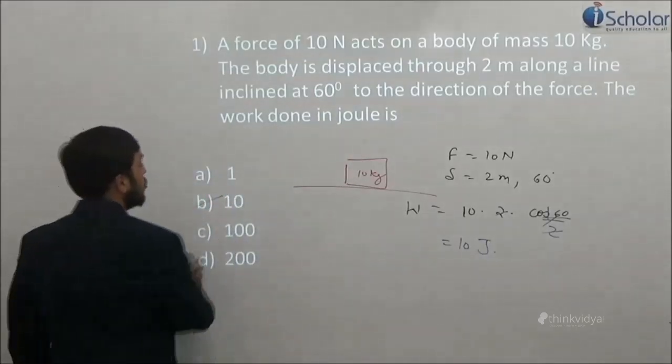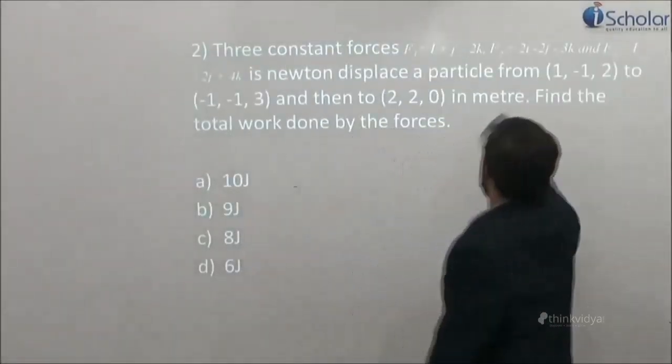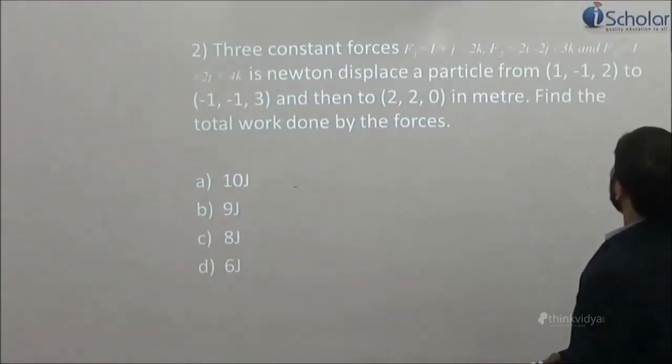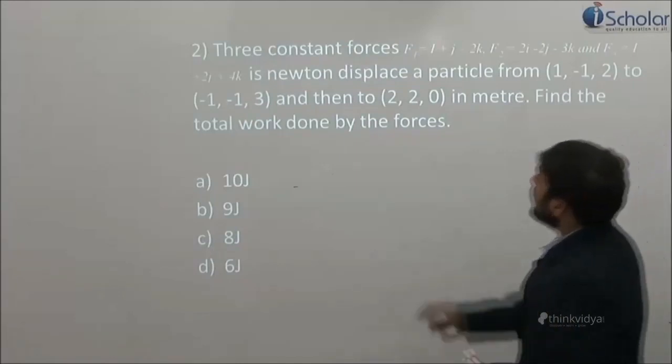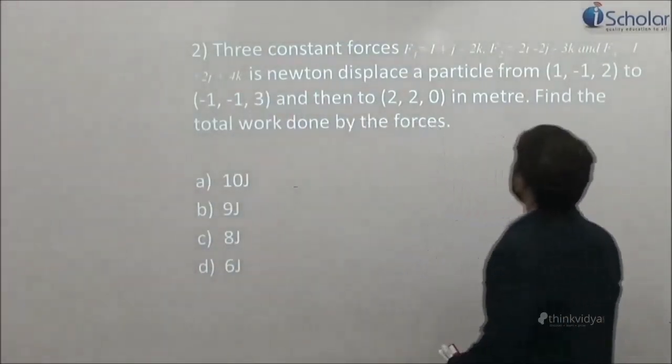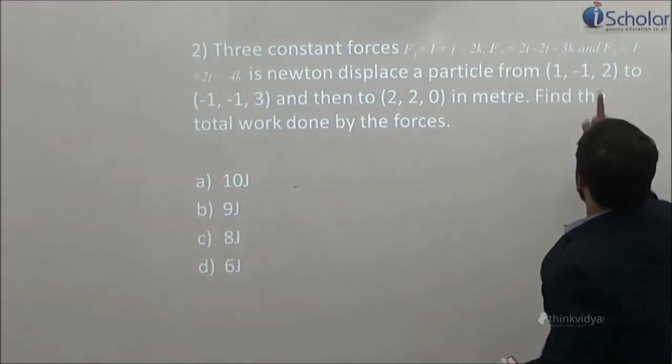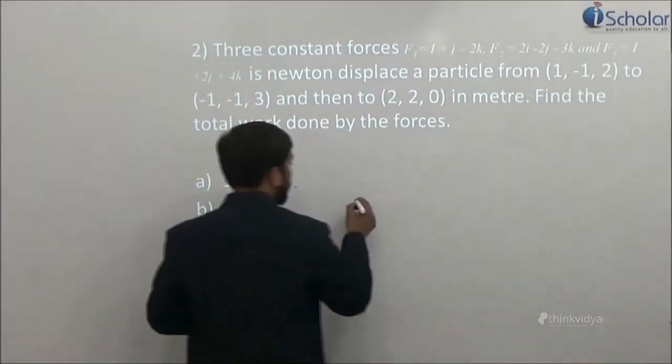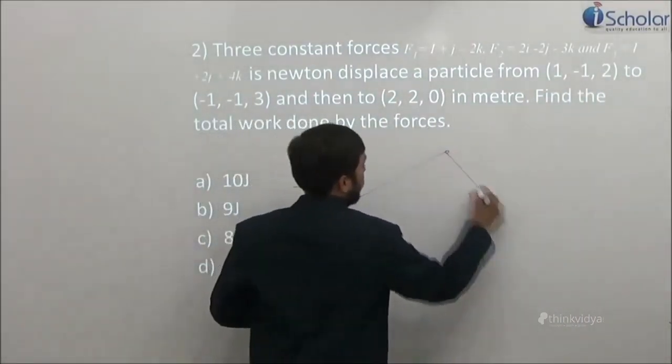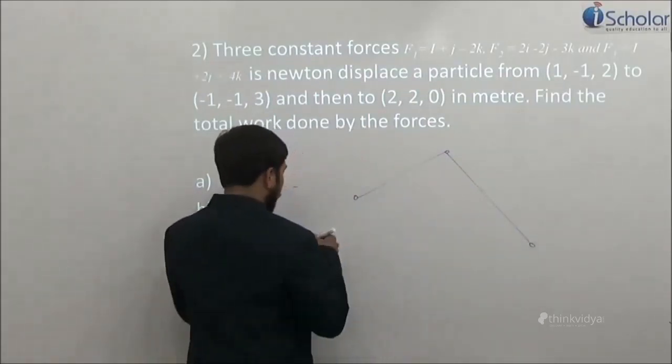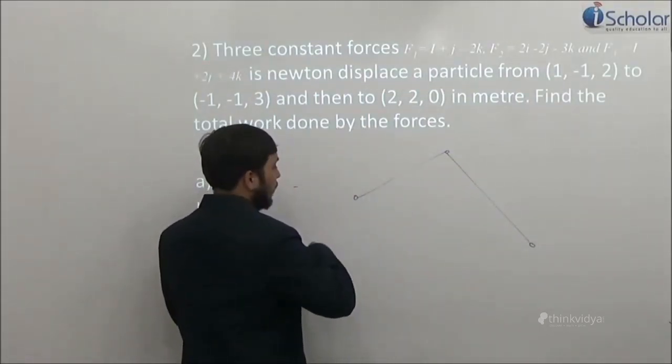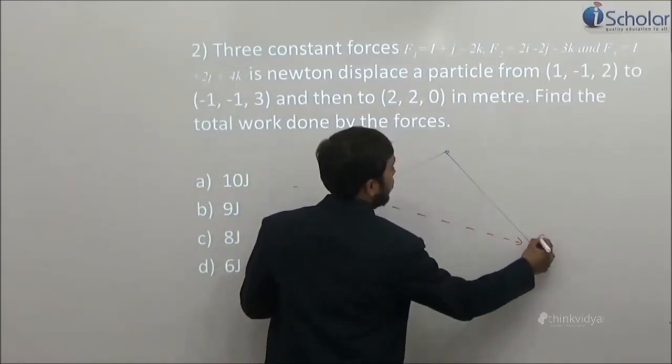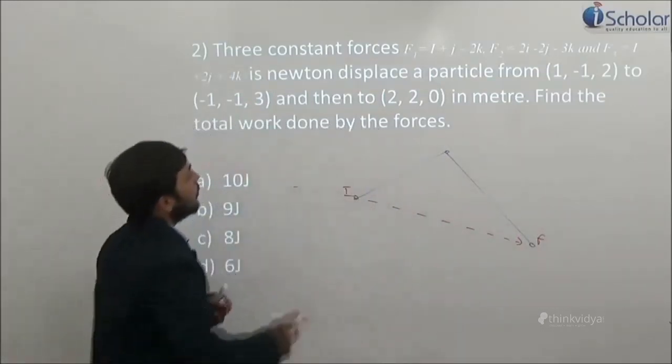Shall we move on to question number 2? Question number 2 states that 3 constant forces in Newton displace a particle from this to this and then to this. Now my first question is what is the displacement? Because they went like this, you know very well that the displacement will be this only and how it will be calculated? Final minus initial.